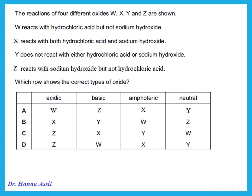Reactions of four different oxides are shown. W reacts with hydrochloric acid but not with sodium hydroxide — it reacts with acid but not base, so it is basic. X reacts with both, so it is amphoteric. Y does not react with either of them, so it is neutral. Z reacts with sodium hydroxide but not with acid — it reacts with base, so it is acidic. The correct row in the table is answer D.